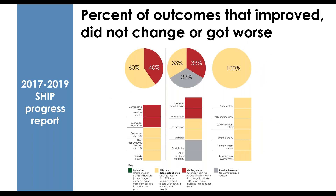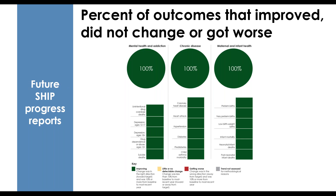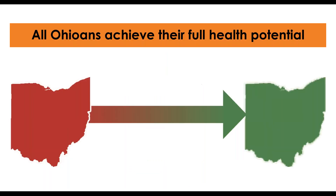The SHIP will be a tool to align state agencies. There's a steering committee made up of representatives, directors, and other designees from these agencies. It's also designed to drive stronger alignment and collaboration at the local level with a wide variety of local partners. The SHIP is our opportunity to track progress over time. This chart shows an early look at Ohio's progress on objectives from the previous 2017-2019 SHIP — green indicates things are improving, yellow indicates little or no detectable change, and red means things have been getting worse. The goal is to get Ohio into the green, ensuring all Ohioans have the opportunity to achieve their full health potential and eliminating disparities and inequities.